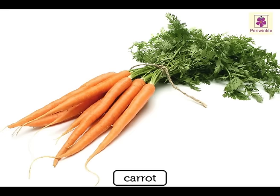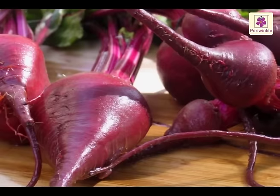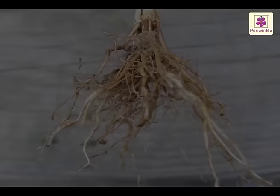Some plants like carrot, radish and beetroot have one main root with thinner roots growing from it. This is called taproot. These roots grow deep into the soil. Most trees have taproot roots.